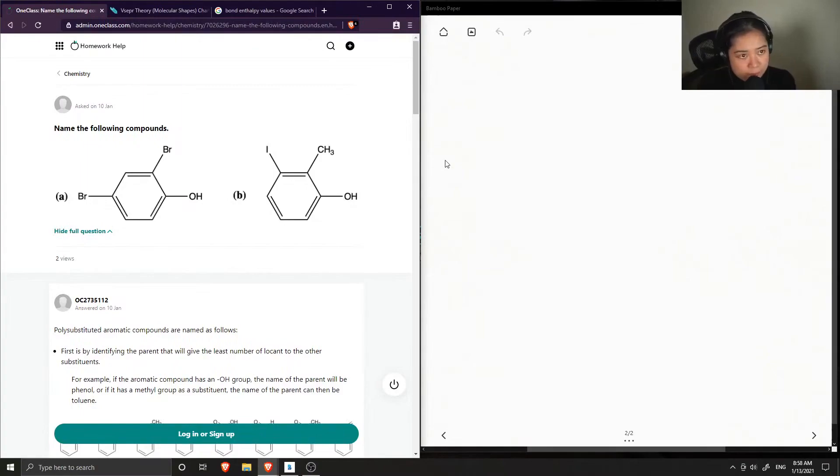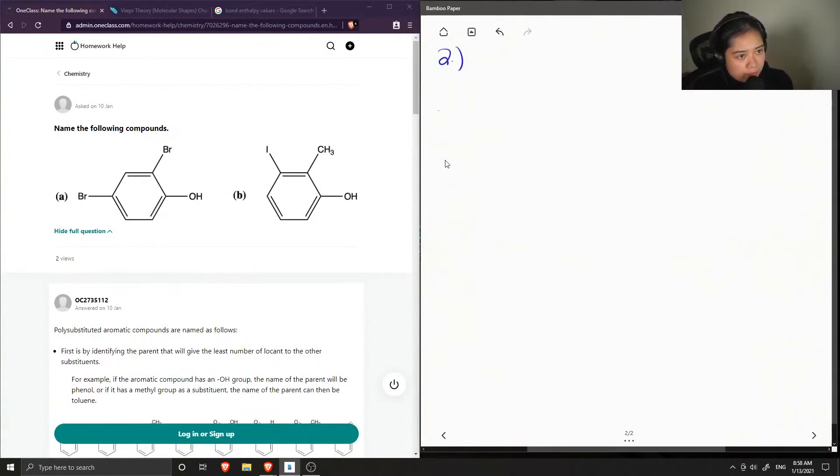Number two is to name the following compounds. So here we have two phenyl groups and they all have different substituents. So this is a benzene ring, which is a six-membered aromatic ring.